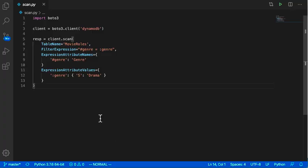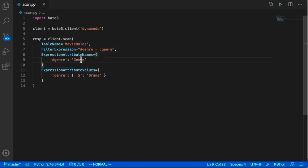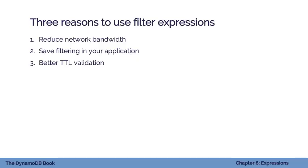Looking at the filter expression in code — it can be used with either query or scan; this example uses scan. You add a parameter called filter expression with a string similar to the key condition expression. Here we specify genre should match drama, so only items with a genre value of drama are returned. There are a few reasons to use filter expressions: reducing network bandwidth from the DynamoDB server to your client can speed up response time if you'd be discarding many items anyway.